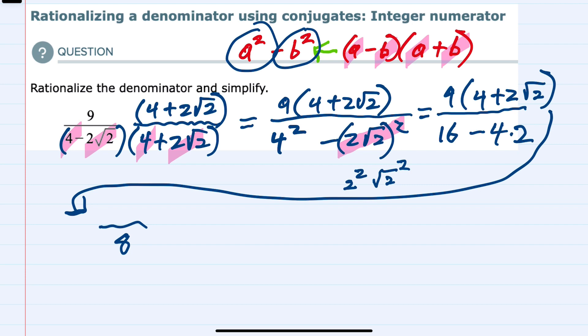In the numerator, I do have multiplication here that I can do. 9 times 4 would be 36. 9 times 2 square roots of 2 would be 18 square roots of 2.